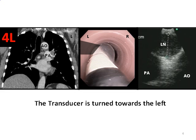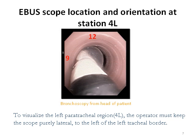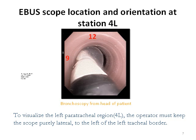The bronchoscope is placed in the lower trachea, approximately at the origin of the left main bronchus. With the balloon inflated, the transducer is turned towards the left to visualize the left paratracheal region. Be aware that while scanning the left lower paratracheal region, one might rotate the bronchoscope anterolaterally, back and forth, between the 12 o'clock and 9 o'clock positions.